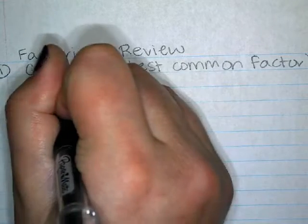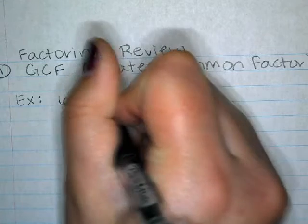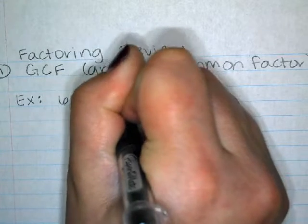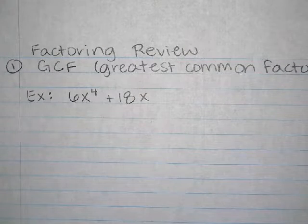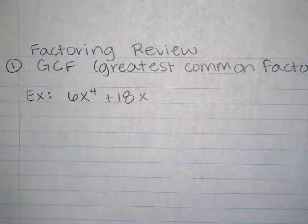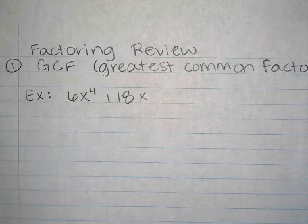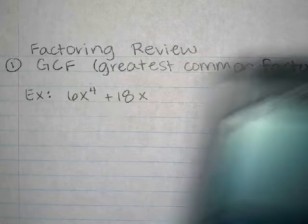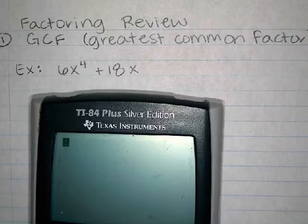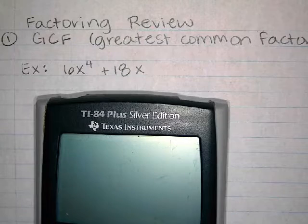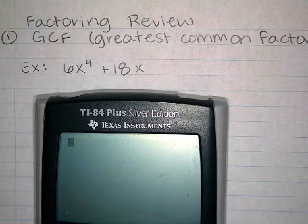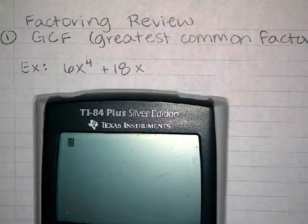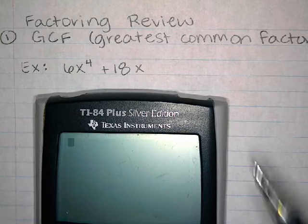Our first example is going to be 6x to the fourth plus 18x. Anybody know what the GCF is? Here's a cool calculator trick — your calculator does it to help you find common denominators, but we're going to use it for GCFs.